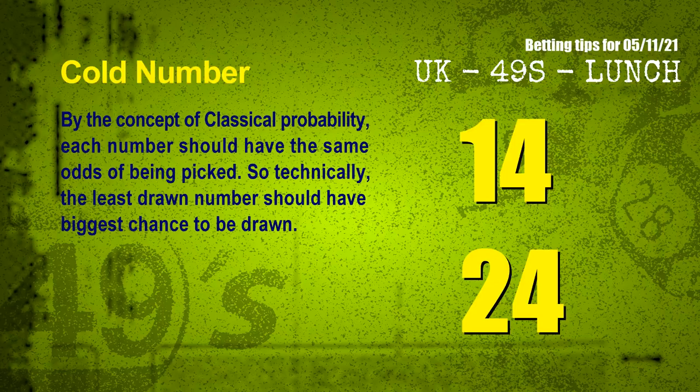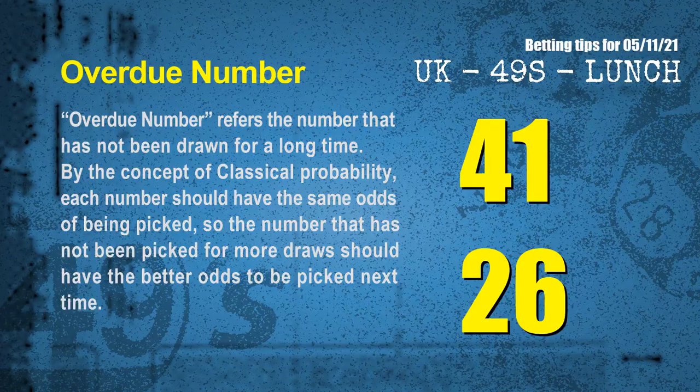In the end of this video, we have two more tips: cold numbers and overdue numbers. By the concept of classical probability, each number should have the same odds of being picked, so technically the least drawn number should have the biggest chance to be drawn. After counting thousands of results, the coldest two numbers for the next draw are 14 and 24. Overdue numbers are those that have not been drawn for a long time. The most overdue two numbers are 41 and 26.